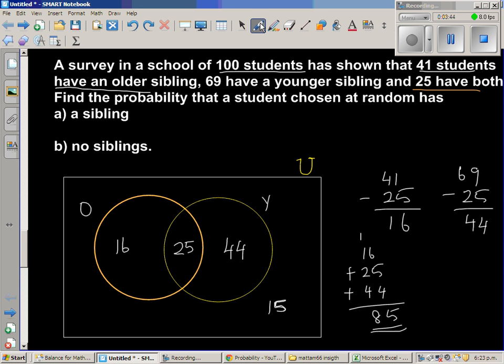So let's answer the question now. Find the probability that a student chosen at random has a sibling. This is the area of students who have siblings. So here they're asking you what is P of O union Y.